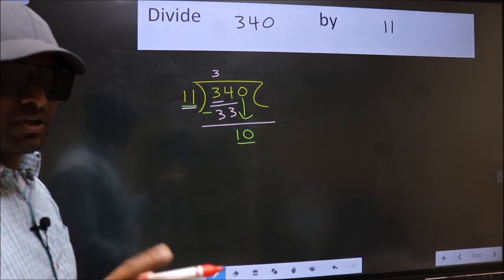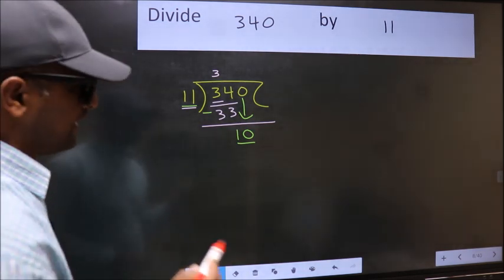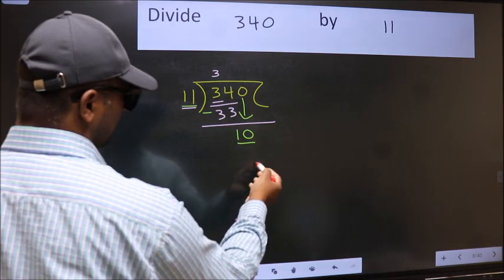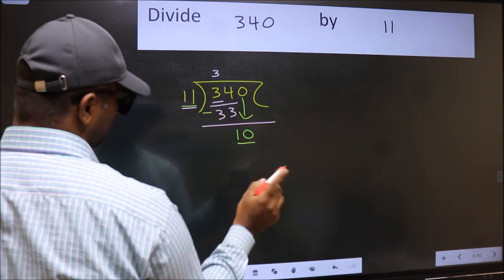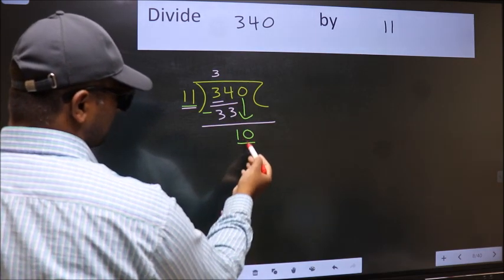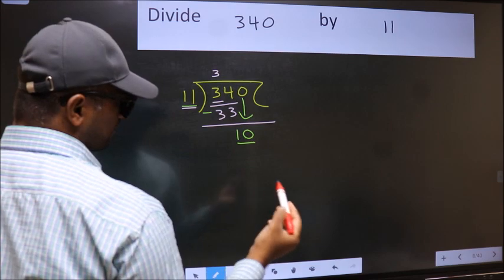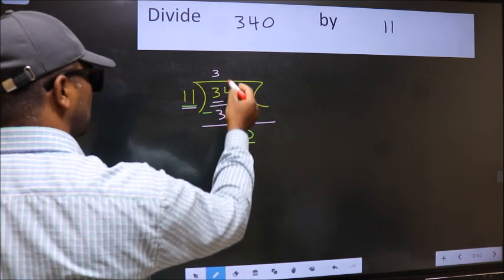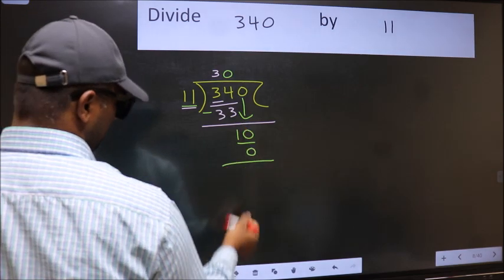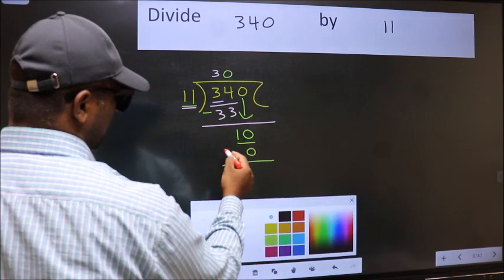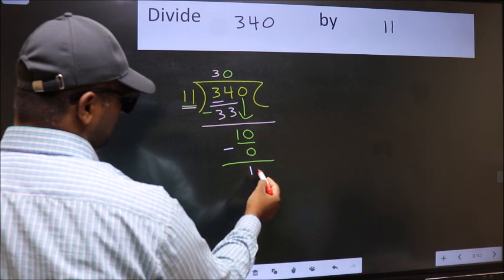Instead, what you should think of doing is, which number should we write here? If I take 1, we will get 11. But 11 is larger than 10. So what we should do is, we should take 0. So 11 into 0 is 0. Now you should subtract. 10 minus 0 is 10.